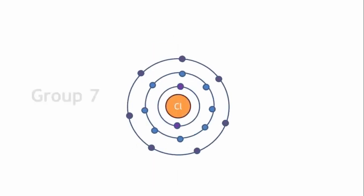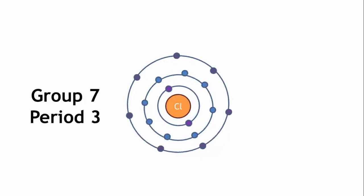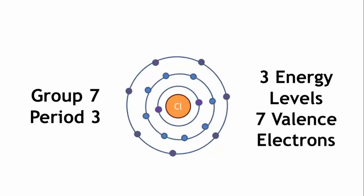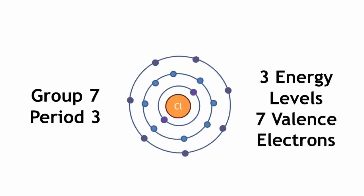So chlorine is in group 7, period 3. Therefore, it has three energy levels with seven electrons in its outermost shell.